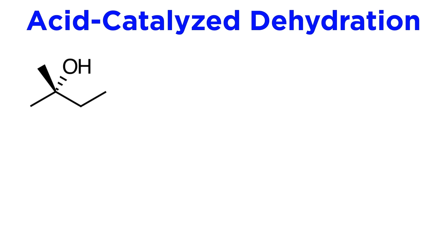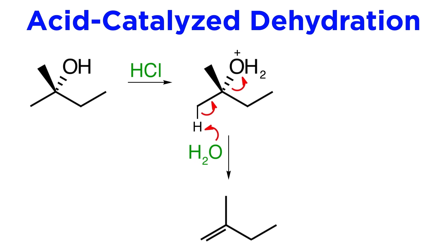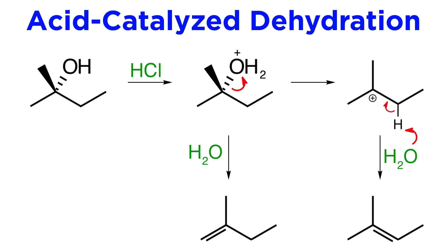Next we have dehydration. This is typically done with acid catalyst and qualifies as an elimination reaction, meaning an alkene will be the product. The mechanism can vary: either the hydroxyl is protonated and then a proton is abstracted by water to form the pi bond and kick off the water moiety, or water leaves first to produce a carbocation intermediate after which the pi bond forms.